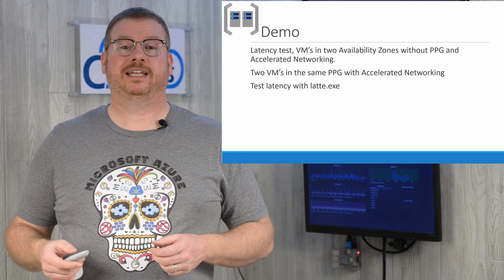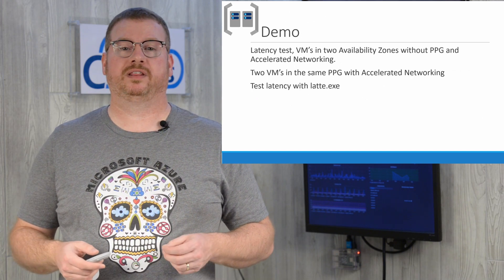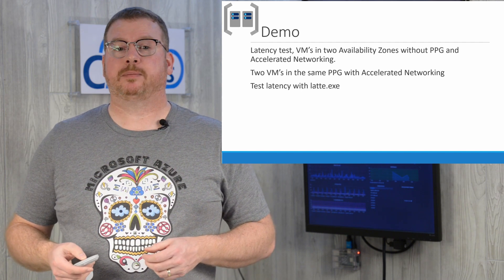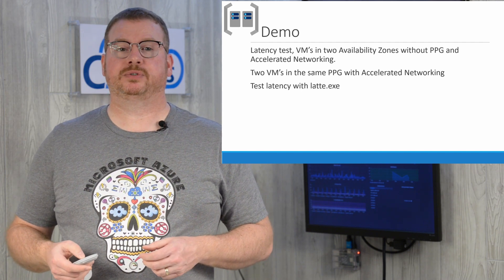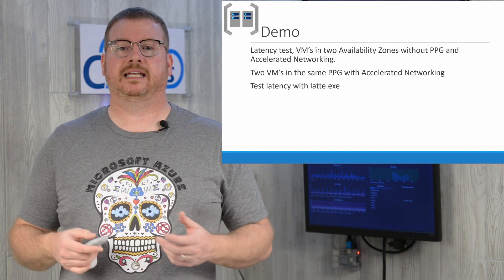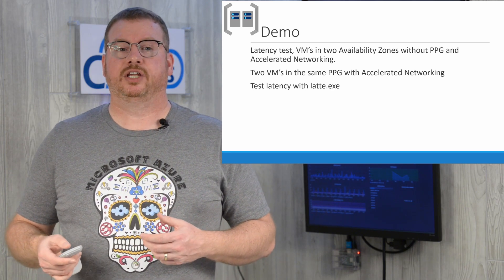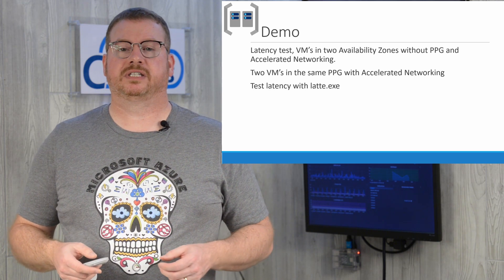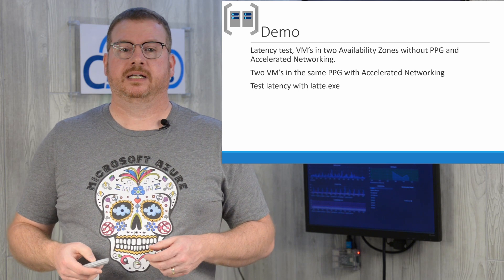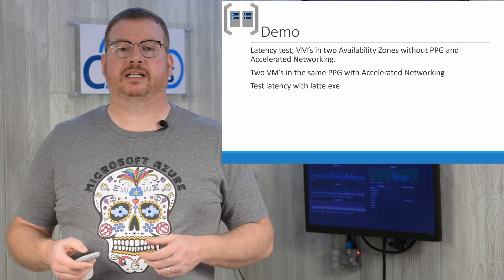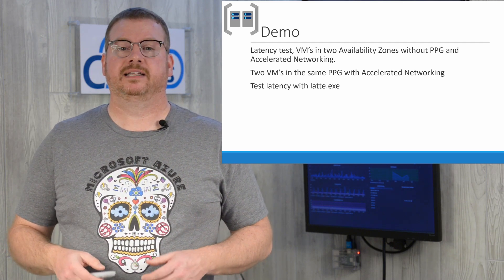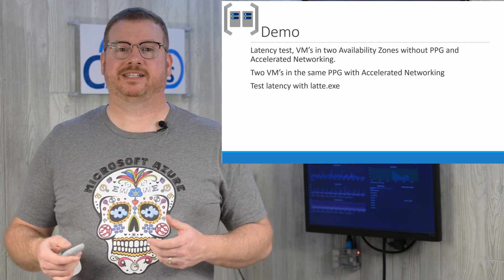For the demo, I'm going to compare performance with and without proximity placement groups and accelerated networking. First, I'll run a latency test between two servers in two different availability zones — this gives the worst-case scenario for distance between servers. Next, I'll deploy two servers in a proximity placement group with accelerated networking and run the same test again, then we'll review the results. Let's get started.